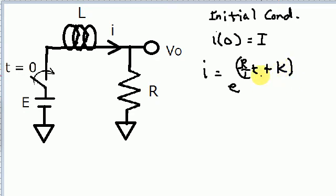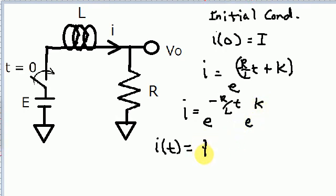Now this K term, this whole expression could be written a little differently. I can say I equals E to the minus R/L times T times E to the K. Now this E to the K term is still a constant, so I can rename it again, I'll just call it K1. Therefore, I of T equals K1 times E to the minus R/L times T.